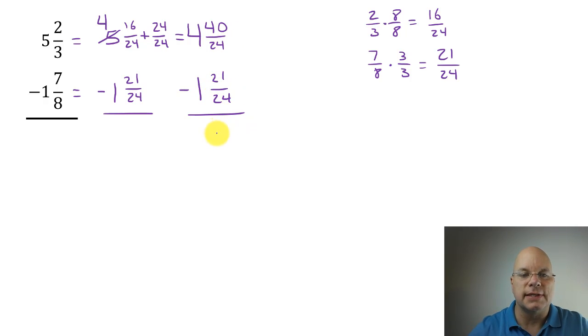40 minus 21 is 19, and four minus one is three. So my difference is 3 and 19/24. Nineteen is a prime number and 24 is not a multiple of 19, so this cannot be simplified. They have no common factors other than one.